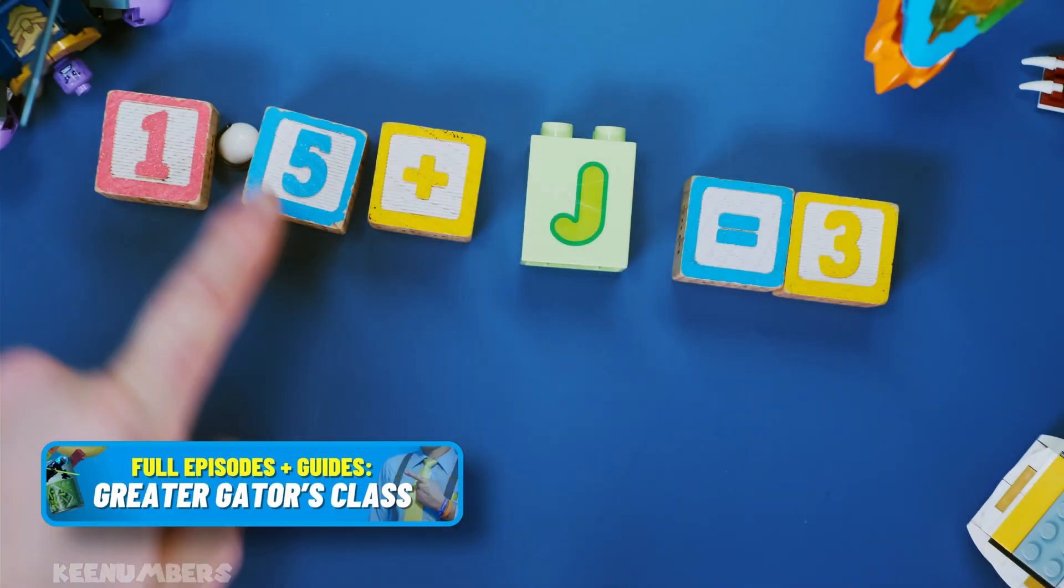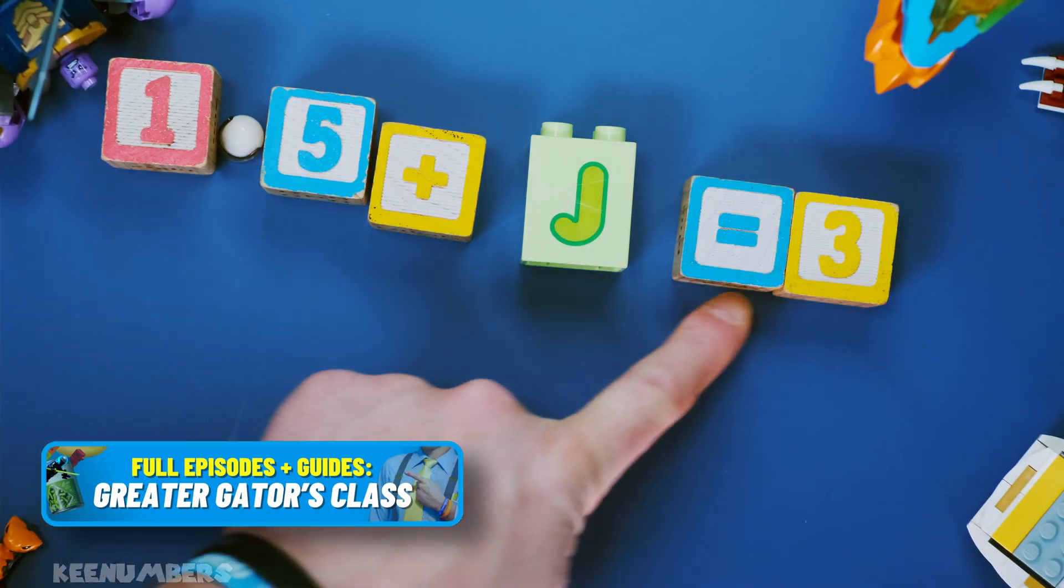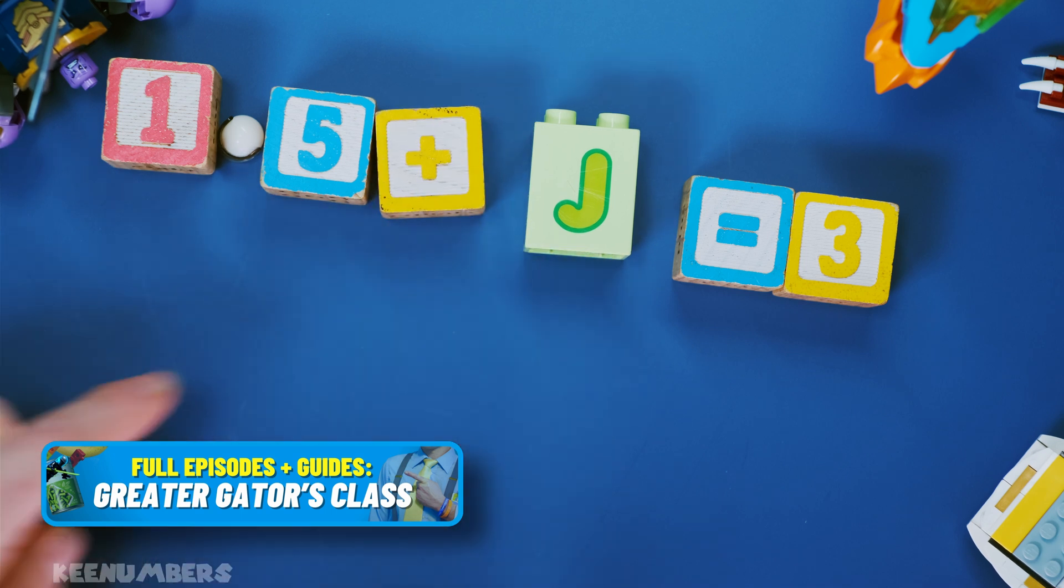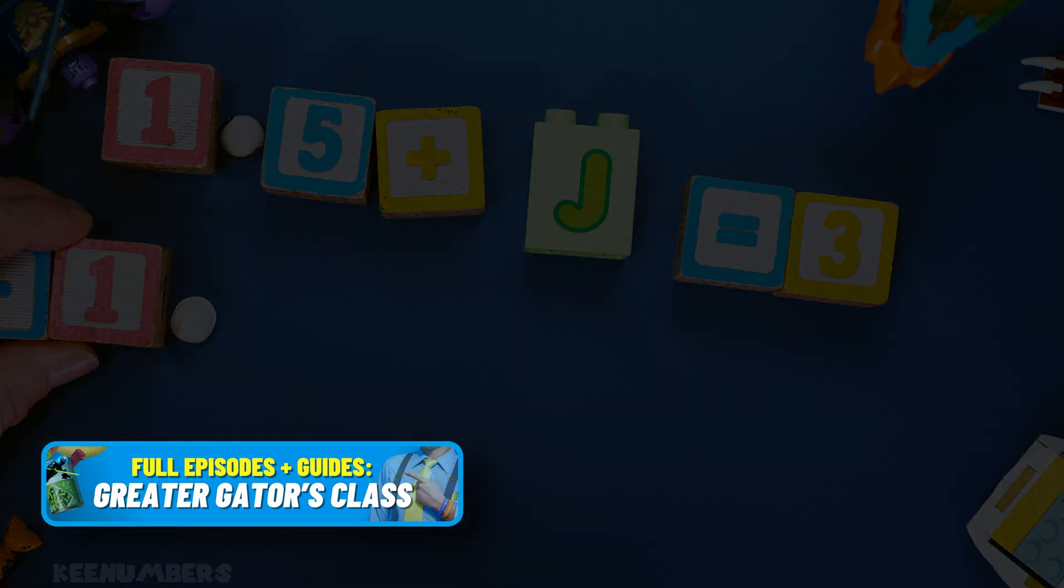1.5 plus J is equal to three. Okay, we're gonna get rid of the 1.5 by subtracting it.